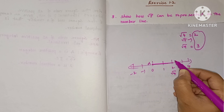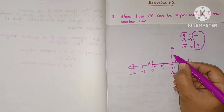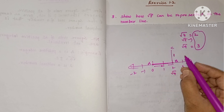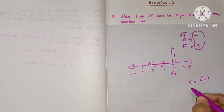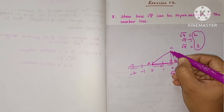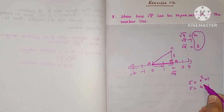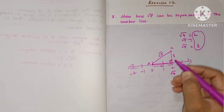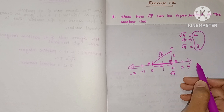Take AB as two units, then draw a perpendicular line BC with one unit. The reason: 5 equals 2 squared plus 1, that is 4 plus 1 equals 5. So by joining, we get a right angle triangle, and by Pythagoras theorem, hypotenuse squared equals side squared plus side squared — 2 squared plus 1 squared equals 4 plus 1 equals 5. So the hypotenuse will be root 5.